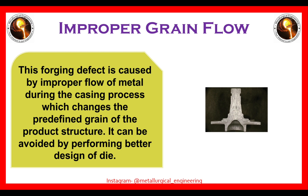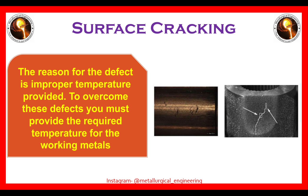Improper grain flow is due to the improper flow of metal during the forging process, which changes the predefined grain structure of the product. This can be resolved by performing a better design of the die.